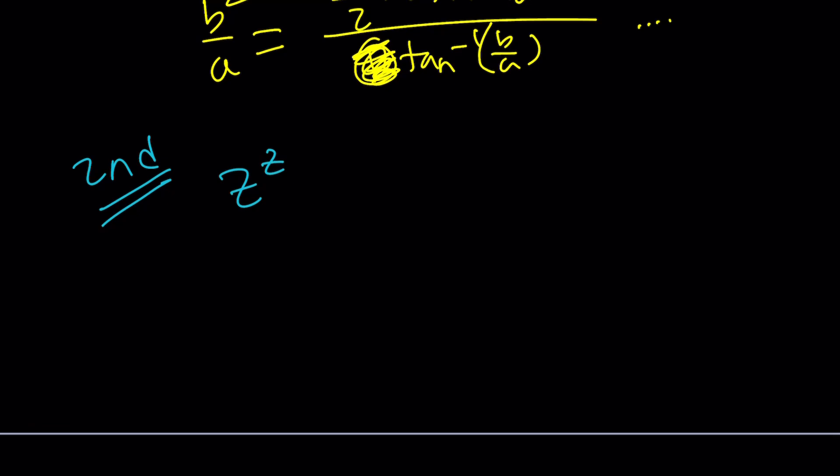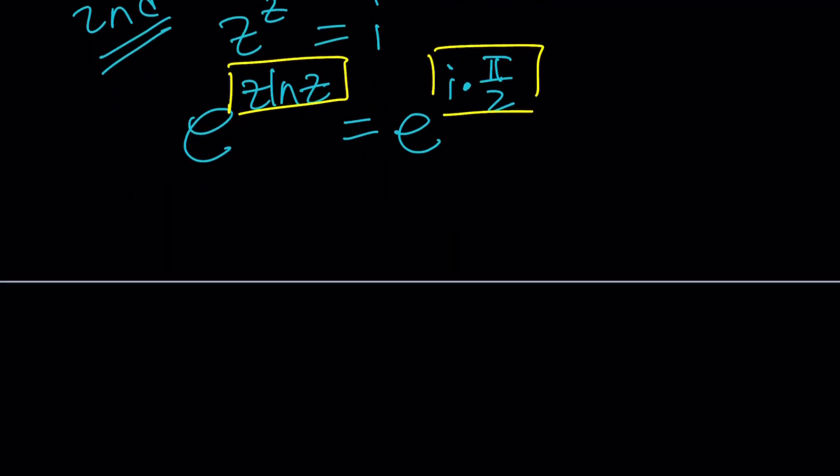So Z to the Z equals I and now we're going to write this as E to the power Z ln Z because that's the definition of complex exponentiation. Again for simplicity's sake I'm just going to go ahead and write the principal value for I E to the I pi over 2. So far so good? Now look at the exponents. Set them equal to each other and then from here you're going to get Z ln Z equals I times pi over 2. Awesome.